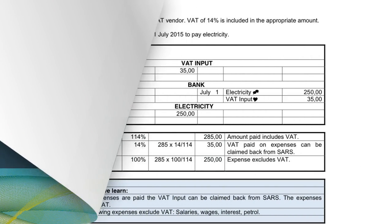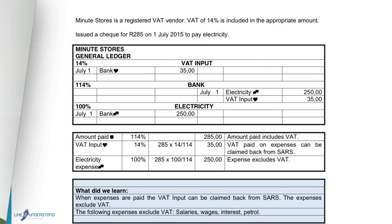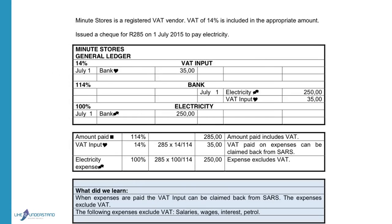Good morning. We will pay attention today on the effect of VAT when expenses are paid. If we issue a check for 285 to pay electricity, it means that this 285 Rand includes the expense for the electricity plus the VAT that we have to pay on all expenses.